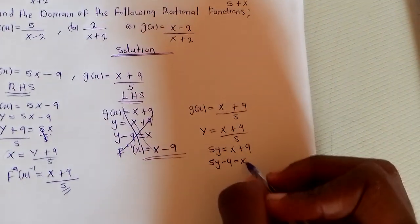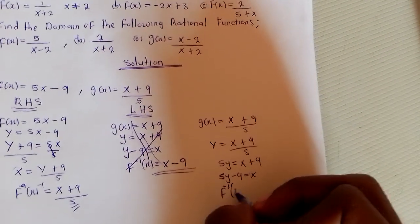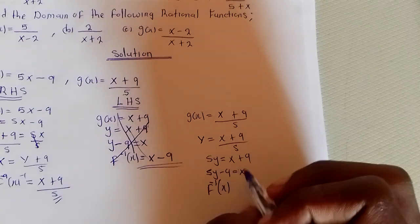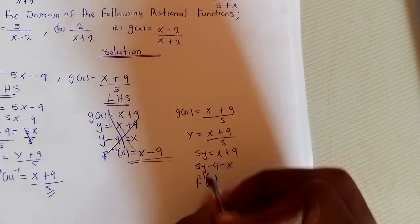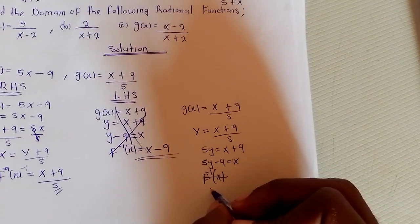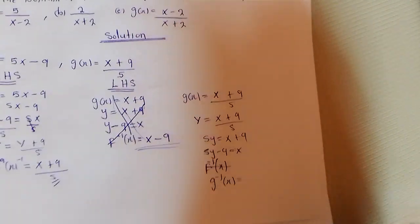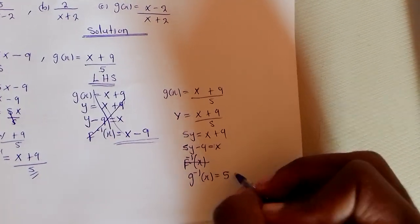We can replace y with x to get g^(-1)(x) = 5x - 9. We have discovered that this is the same as f(x).